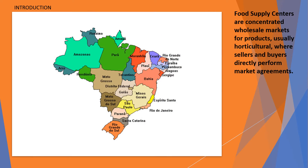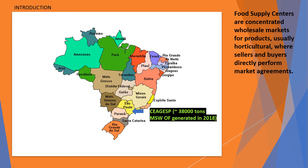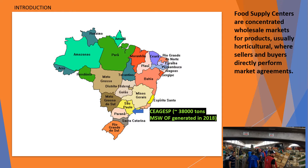Food supply centers are concentrated wholesale markets for products, usually horticultural, where sellers and buyers directly perform market agreements. The food supply center object of this study is called Seagespi, and it's located in São Paulo state in Brazil.